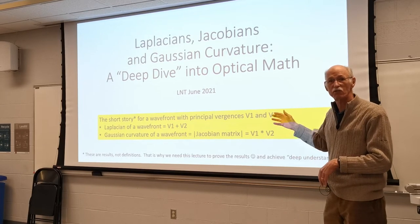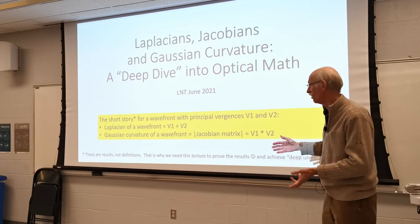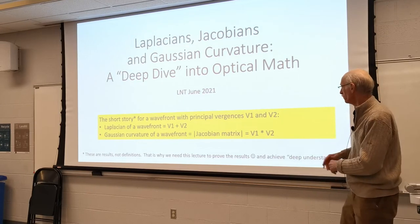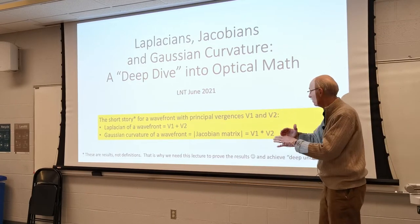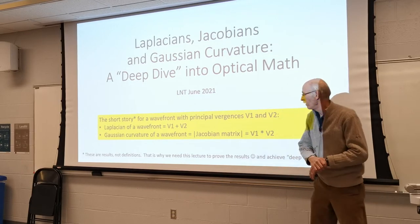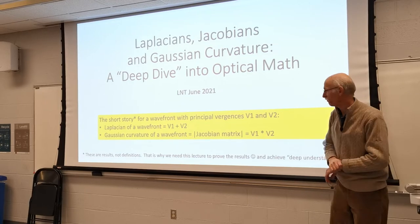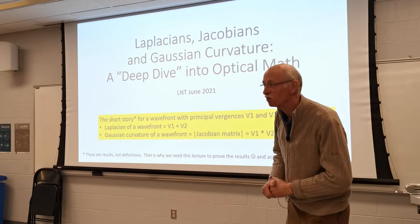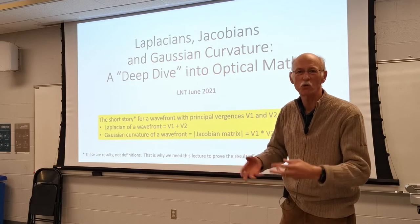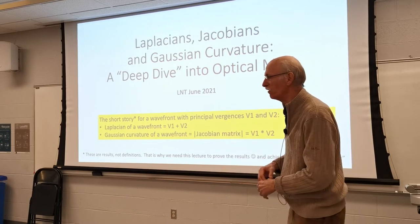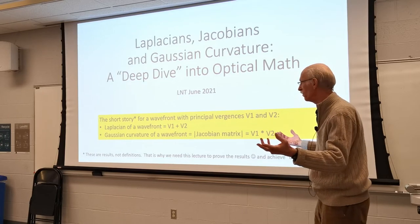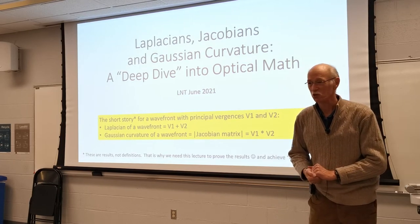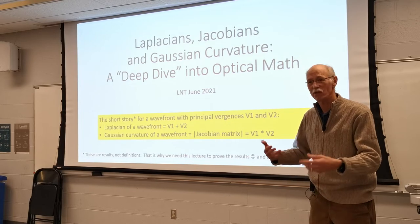The short story for anybody who has to leave early is an extremely simple result. If you have a wavefront with principal curvatures — the vergences, or principal curvatures as we say in optometry — mean one and two, then the Laplacian of that wavefront is just the sum of those two vergences. It's twice the mean. In optometry we would say that would be the mean spherical equivalent. And the Gaussian curvature has to be the product of those two vergences, the principal vergences. So one is the sum and the other is the product.